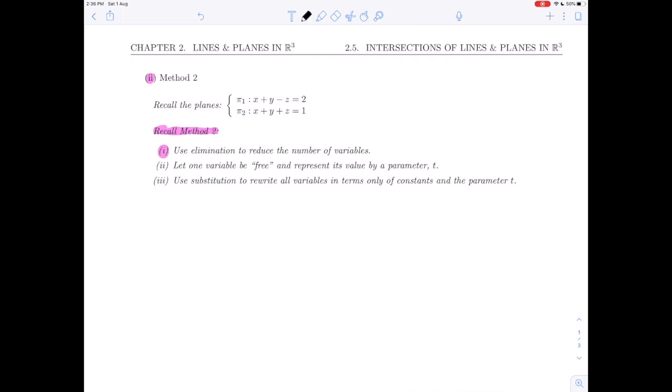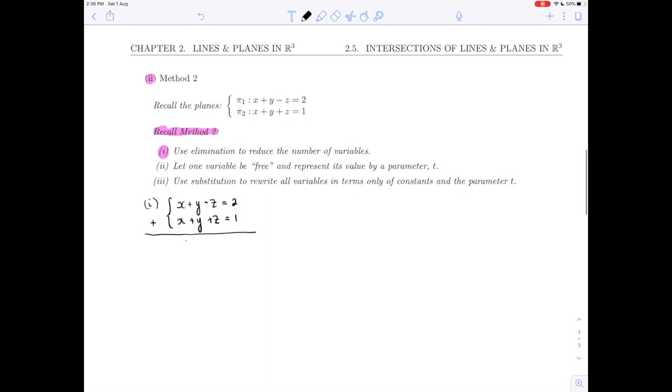Step 1 says use elimination to reduce the number of variables. Elimination is the process of adding or subtracting multiples of equations from each other with the goal of getting rid of one variable. I'm recopying the system here. I can take advantage of the opposite signs in z and just add those two equations together to get rid of z. So I'm going to get 2x + 2y = 3.